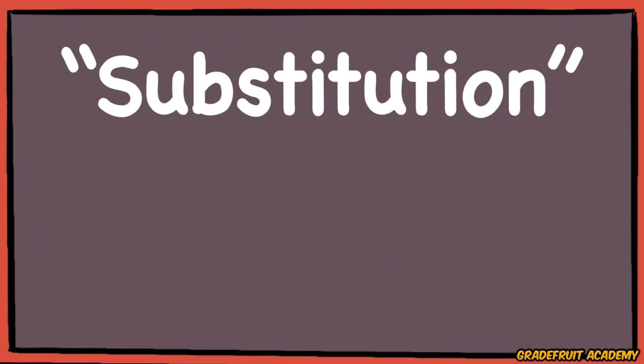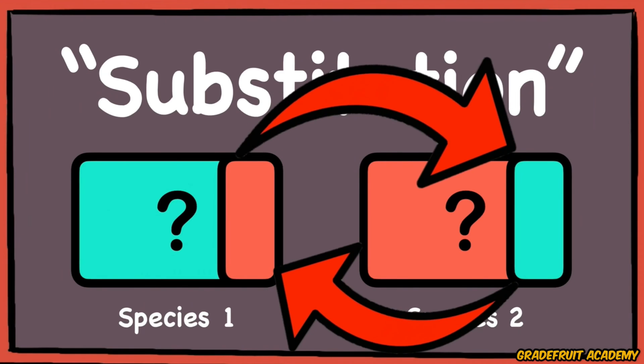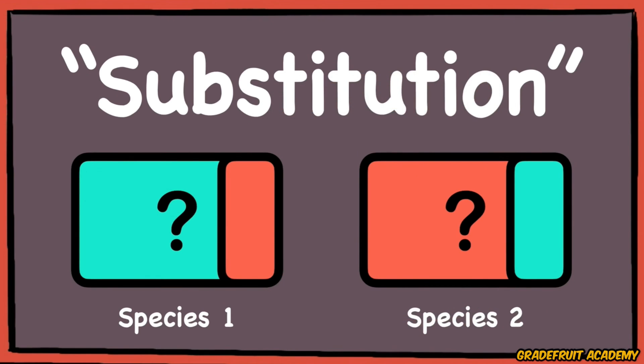As the word substitution suggests, there needs to be two species involved so that each of them can exchange parts or substitute a part of each other.